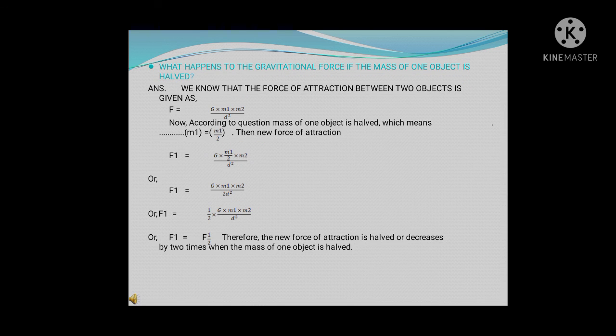Third question: what happens to the gravitational force if the mass of one object is half? Half means we divide by 2. The force of attraction is F = G·m1·m2 / d². According to the question, m1 becomes m1/2. The new force: F1 = G·(m1/2)·m2 / d² = G·m1·m2 / (2d²). Bringing the numerical term outside: F1 = (1/2)·(G·m1·m2 / d²) = (1/2)F. The new force is half, or decreased by 2 times, compared to the initial force.